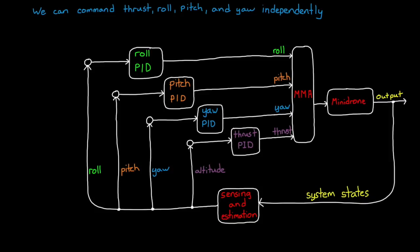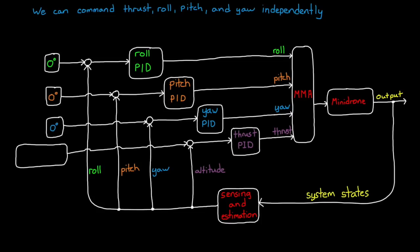All right, so now what do we have? Well, we have four independent or decoupled controllers. One for thrust, which is really an altitude controller since we're claiming small roll and pitch angles. And then three controllers that are trying to maintain zero degrees and roll, pitch, and yaw, respectively. This should maintain altitude, and it should keep the mini drone facing forward and level with the ground.